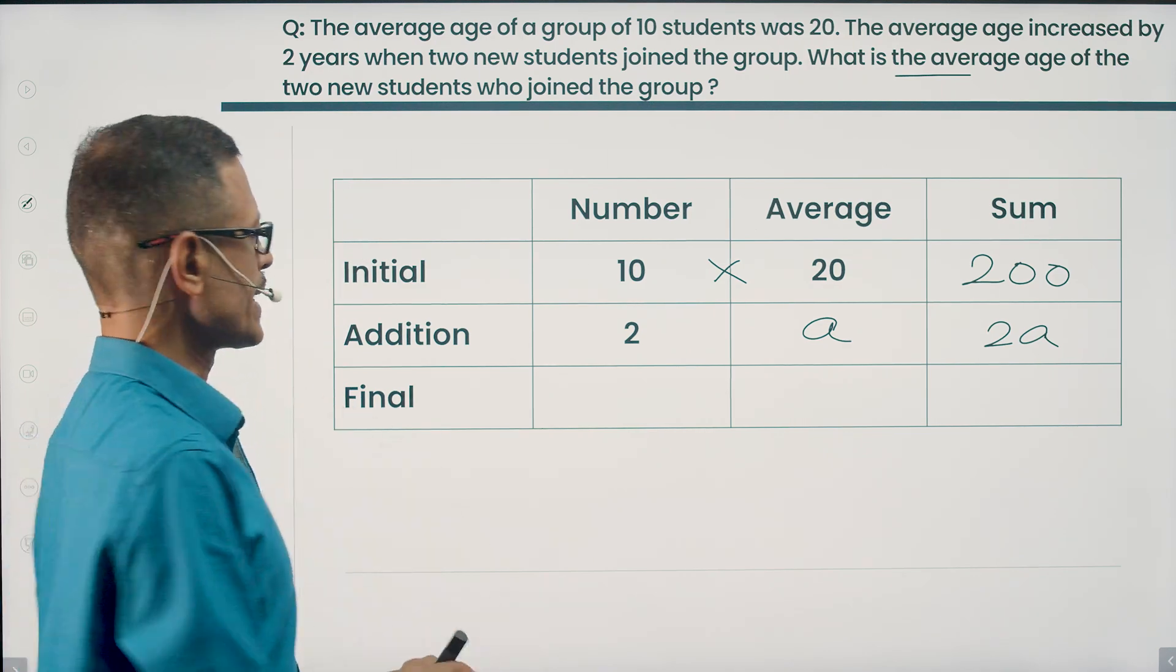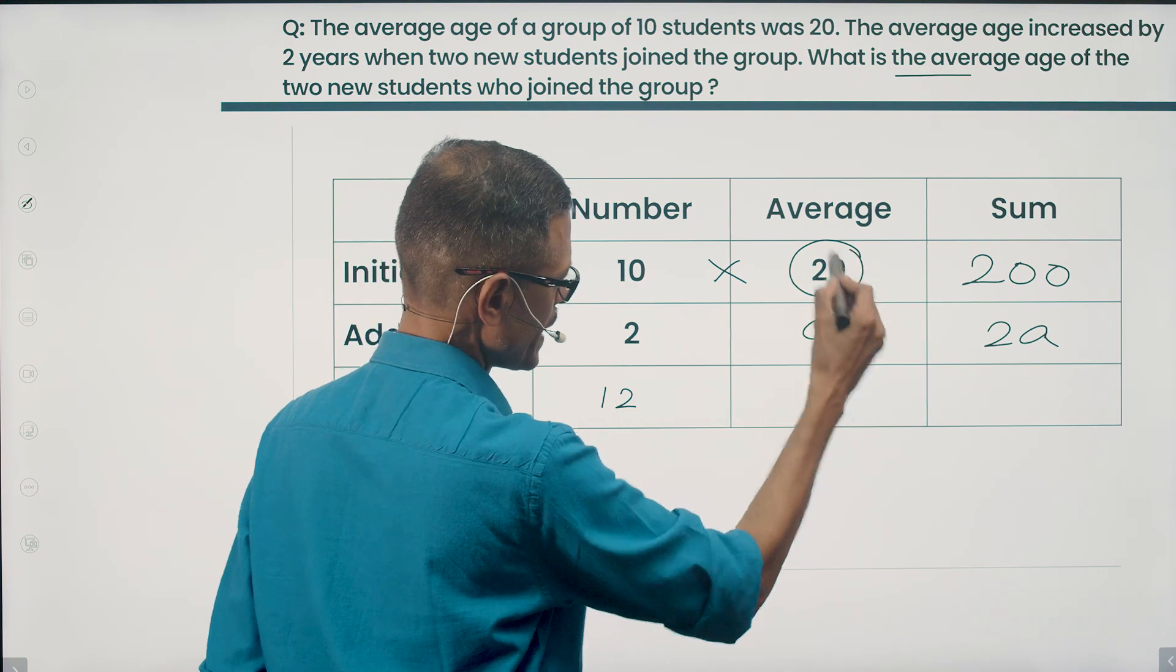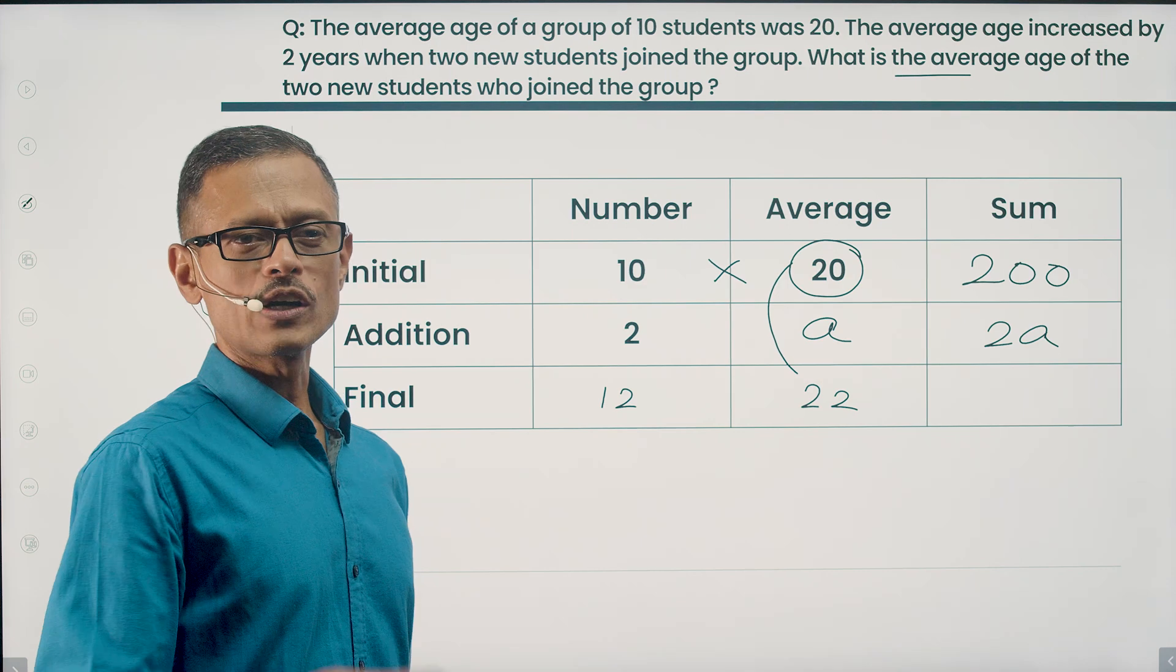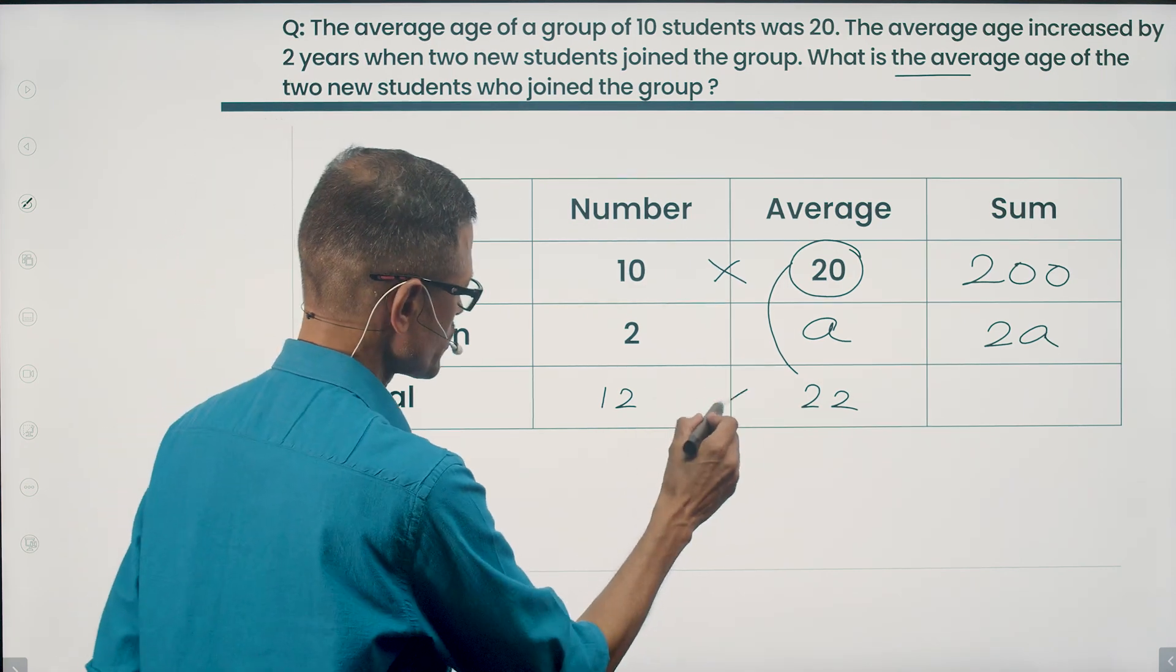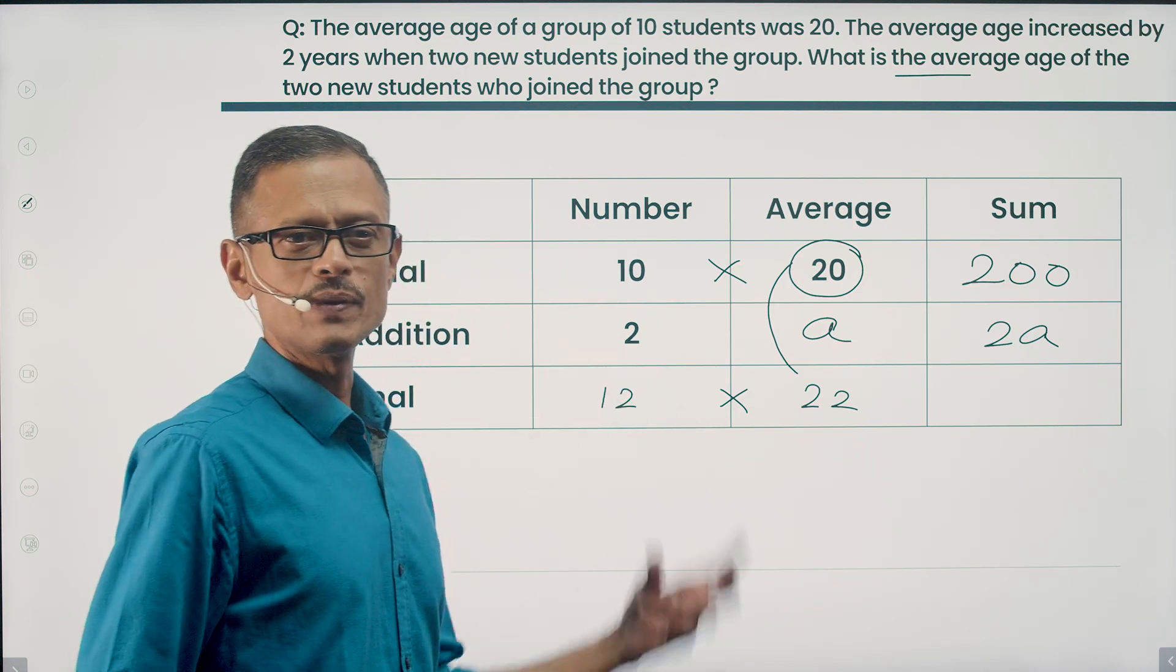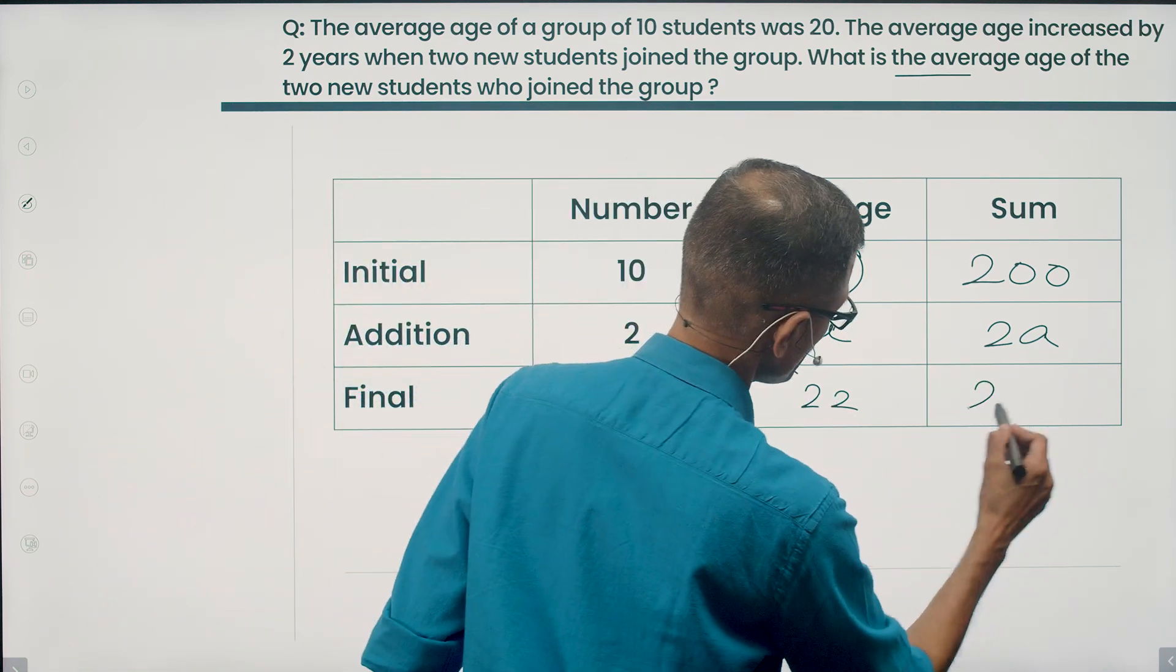Now with the two new students joining, the overall count becomes 12. The average has gone up by 2. So this 20 is going to become 22. Let's run through the same process. What will be the sum of the ages of all 12 students? Number times the new average. 22 times 12. 22 into 10 is 220. Plus another 44. 264 is what we have.